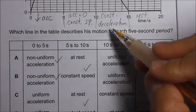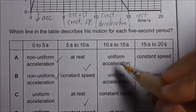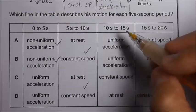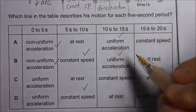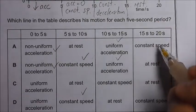And the third part is constant deceleration. Deceleration is actually negative acceleration, so we can choose the option uniform acceleration. And the last part is at rest. So from this we can see that the answer is B.